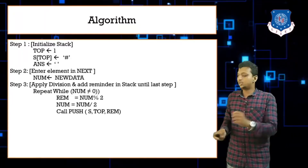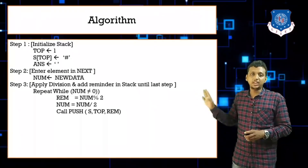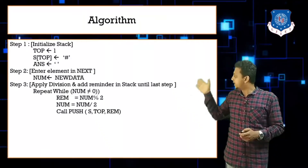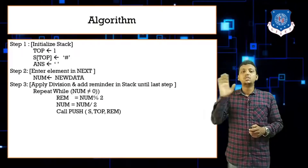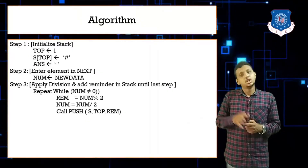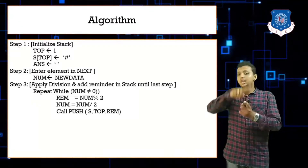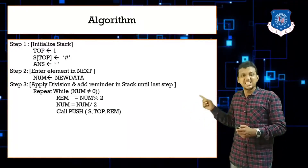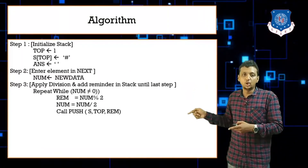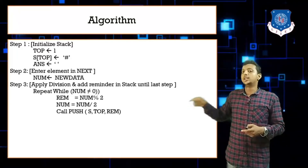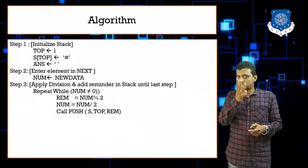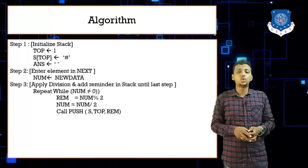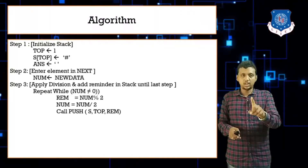Walking through the algorithm with 12: remainder = 12 mod 2 = 0, number = 12 ÷ 2 = 6, push 0. Next iteration: 6 mod 2 = 0, number = 3, push 0. Next: 3 mod 2 = 1, number = 3 ÷ 2 = 1 (integer), push 1. Next: 1 mod 2 = 1, push 1, number = 1 ÷ 2 = 0.